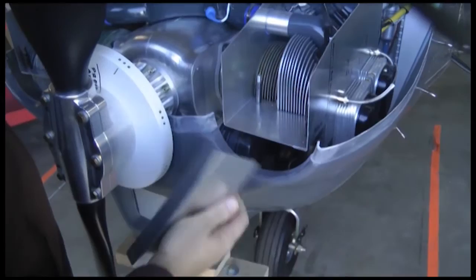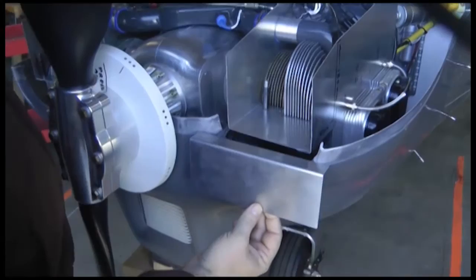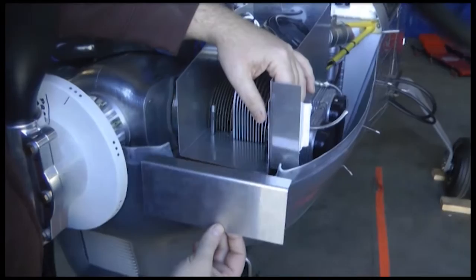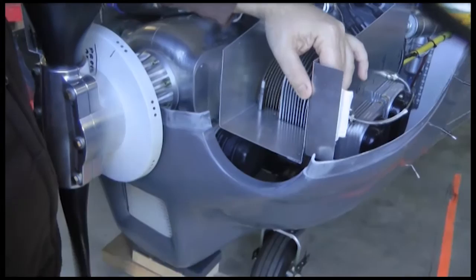We're going to now fabricate our forward baffle pieces that will close out the opening part of the cowl opening. This lower one will fit on the bottom, and the smaller one will fit on the side.